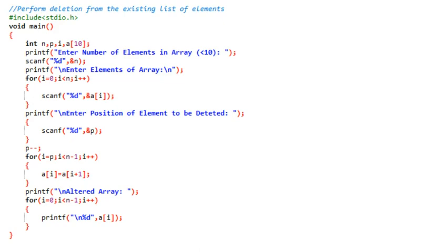We are discussing a C program which is going to perform deletion from an existing list of elements. There will be a certain array given to us, and we are going to perform the deletion. The first line is a comment because two slashes are given. Afterward we have the hash include stdio.h, which is the header file for printf and scanf functions. Void means no return type.